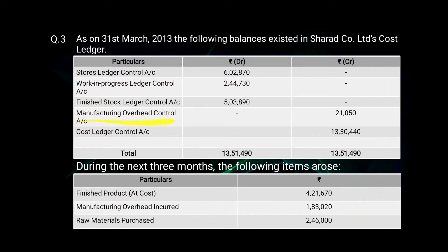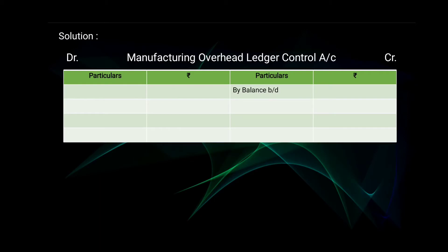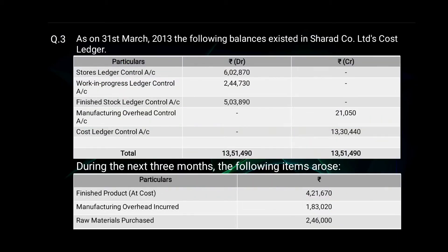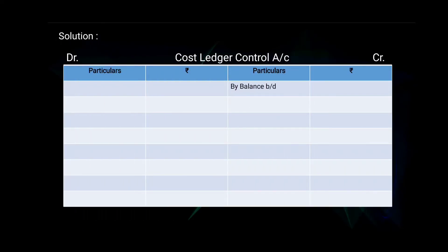Manufacturing Overhead Control Account balance is 21,050 — recorded on the credit side as 'by balance brought down.' Cost Ledger Control Account balance is 13 lakh 30,440 — recorded on the credit side as 'by balance brought down.'